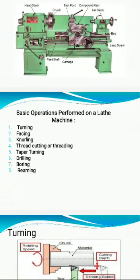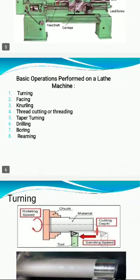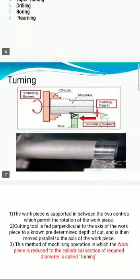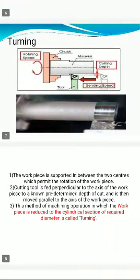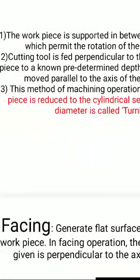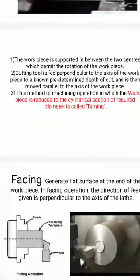From the lathe machine, we have to perform any number of operations. These are: turning, facing, knurling, thread cutting, taper turning, drilling, boring, reaming. We have to discuss one by one. What is turning? Turning means the workpiece is reduced to a cylindrical section of the required diameter.